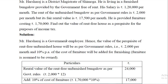Mr. Harsha Raj is a government employee. Hence the value of the perquisite of rent-free unfurnished house will be as per government rules — that is ₹2,000 per month, so ₹2,000 into 12 equals ₹24,000.